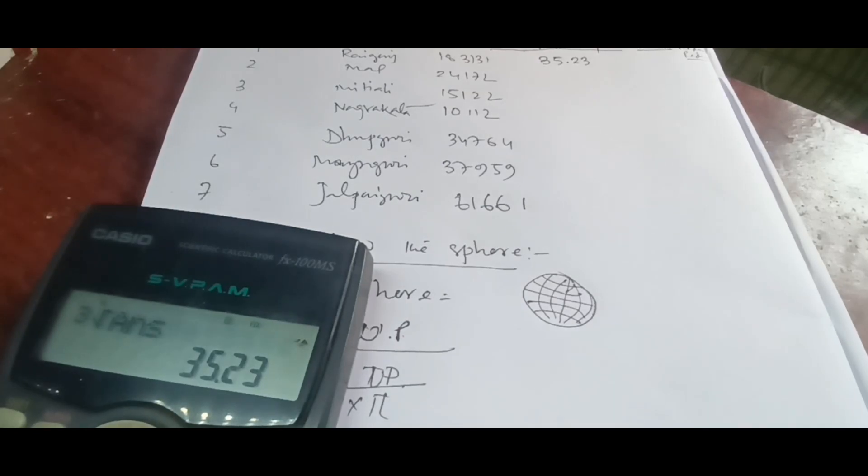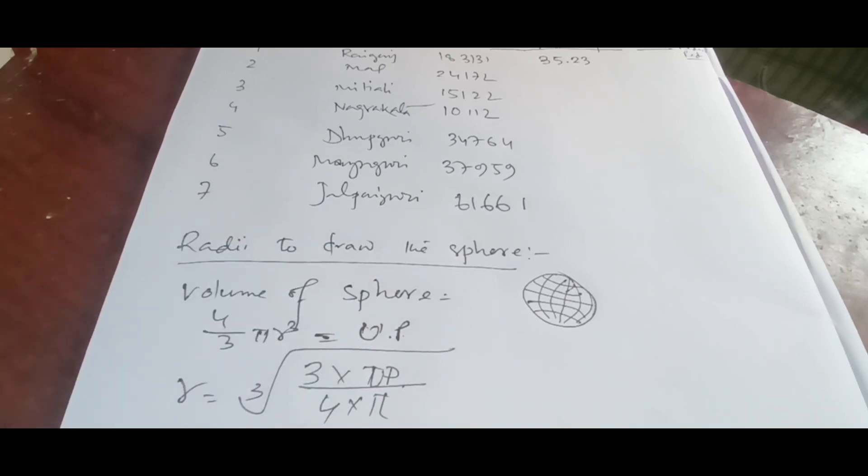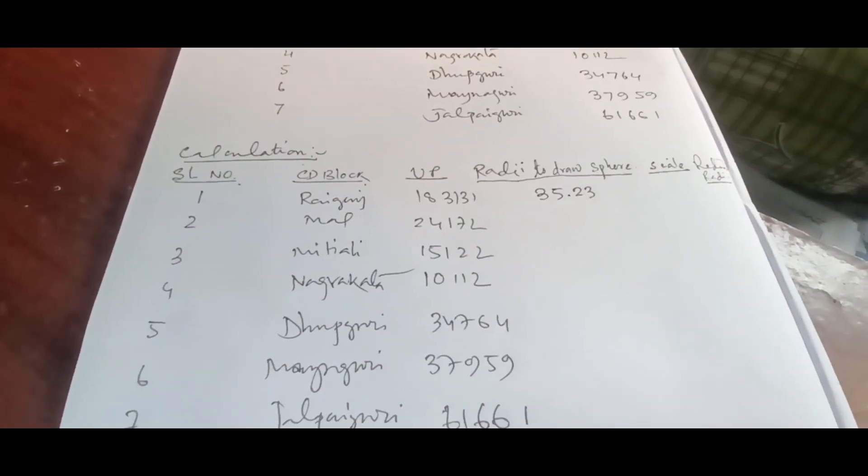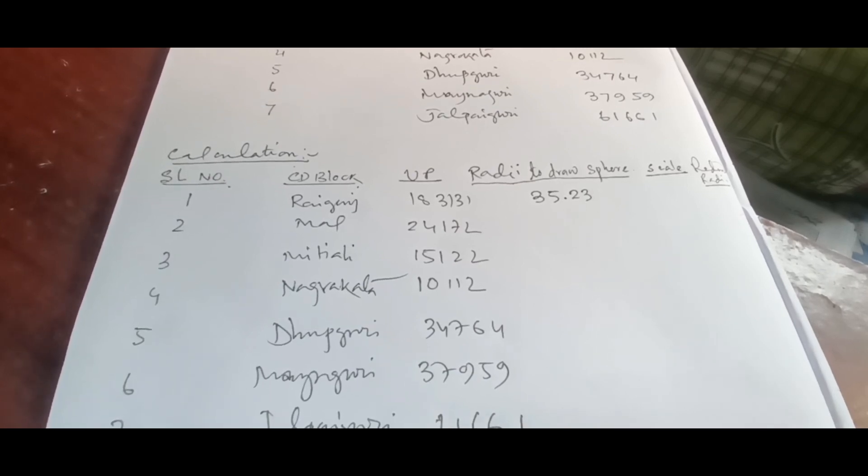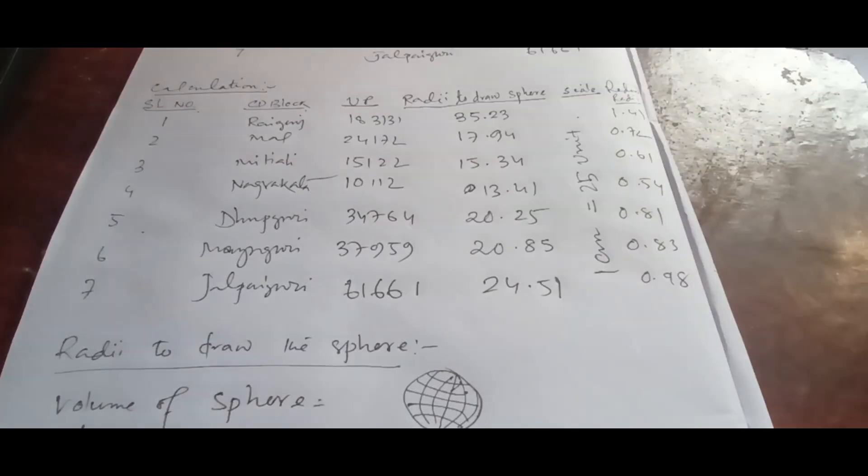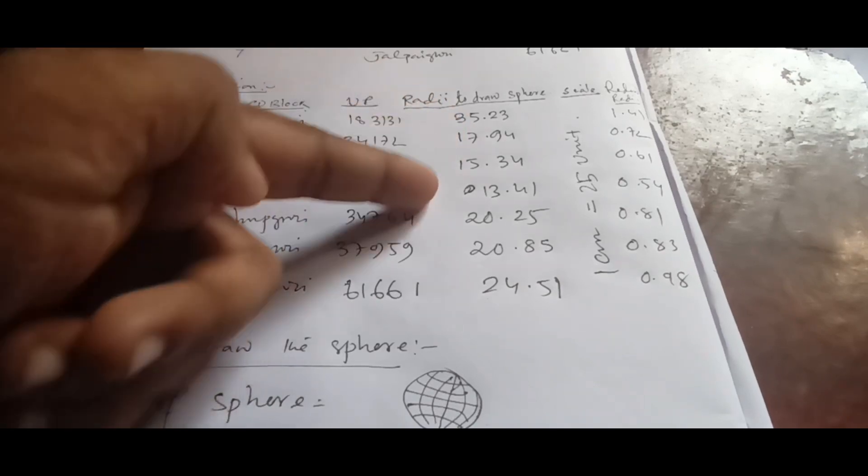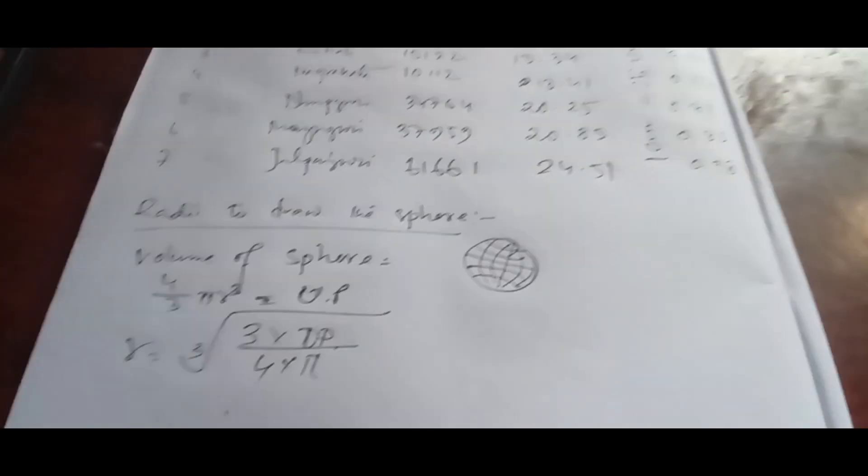These values are actually not having any unit basically, but we have to convert this, considering these as units, we have to convert this in centimeter or inch whatever possible. This is the way we have to find out all the radii. Let me calculate the radii first and then get back to you. I have calculated all other radii based on the formula.